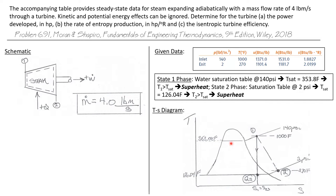Next, let's plot the process for the isentropic turbine. An isentropic turbine is an idealized turbine that follows an isentropic process — meaning there is no change in entropy. It is adiabatic and reversible, so there is no entropy production within the system.